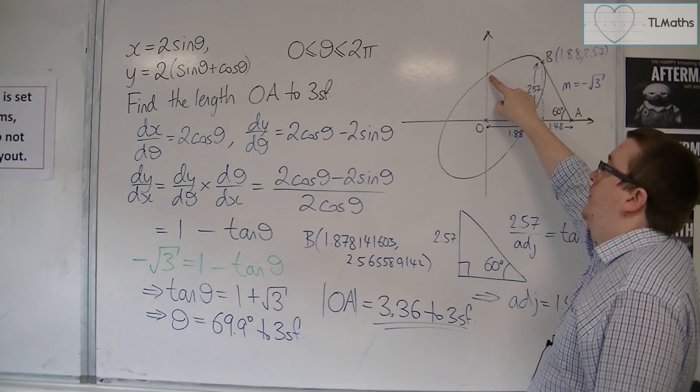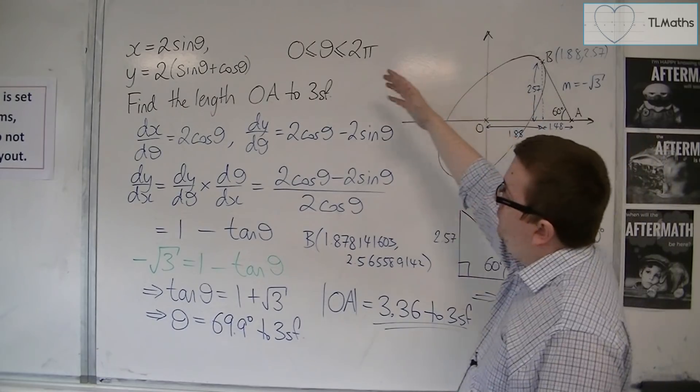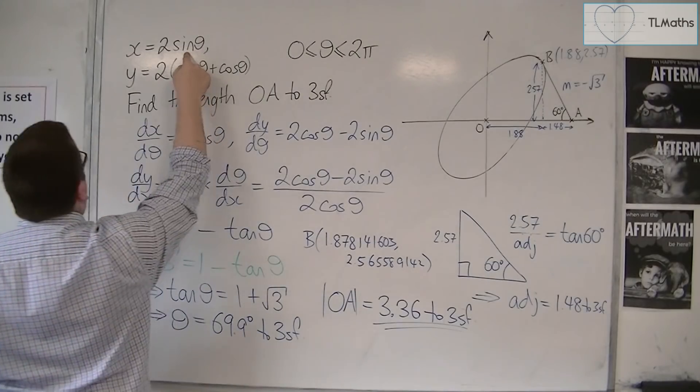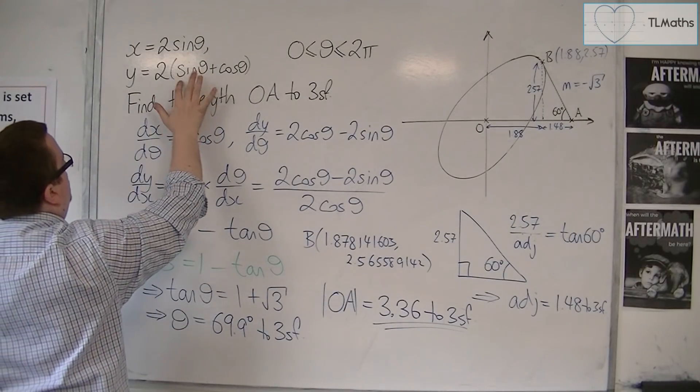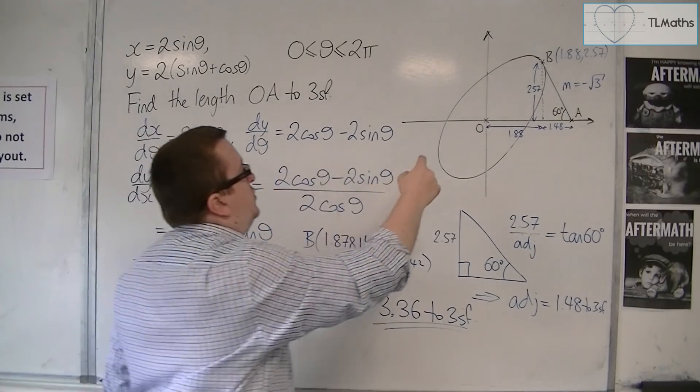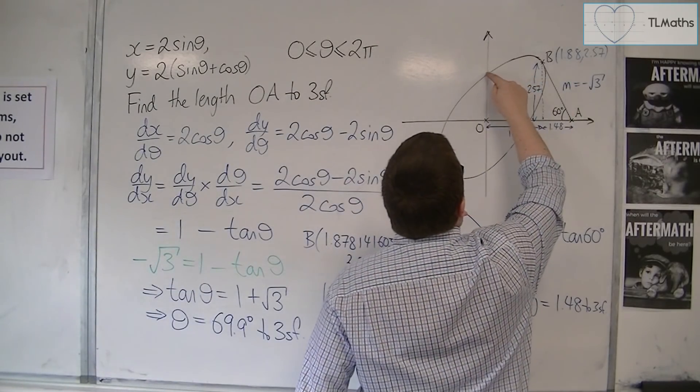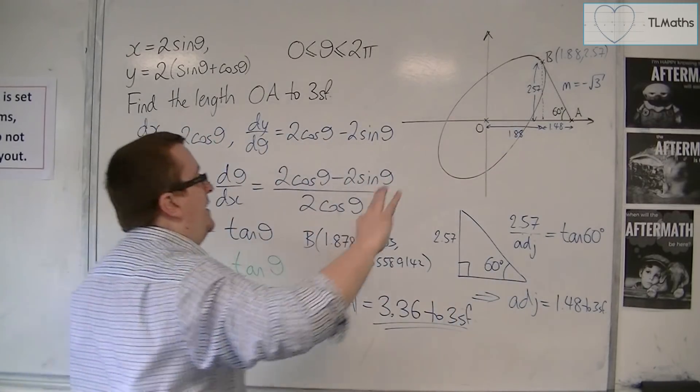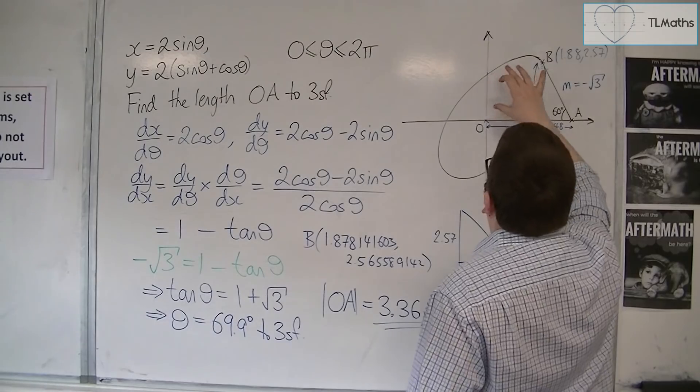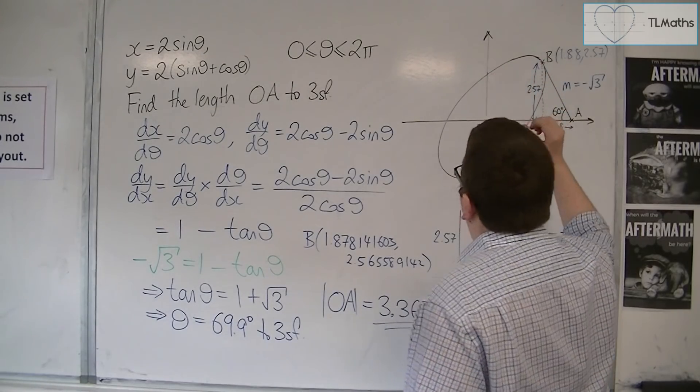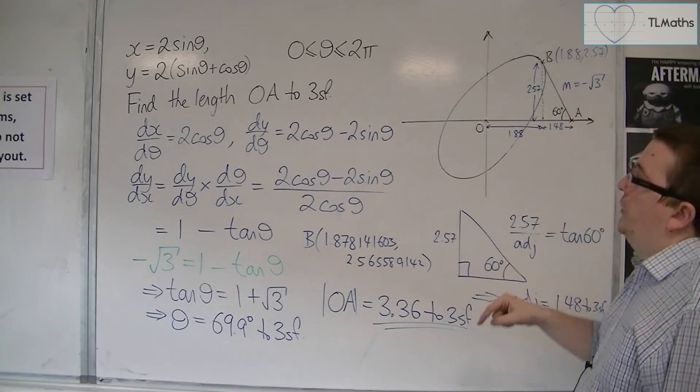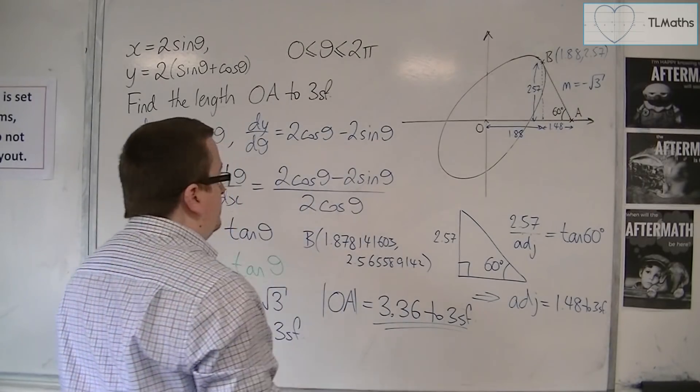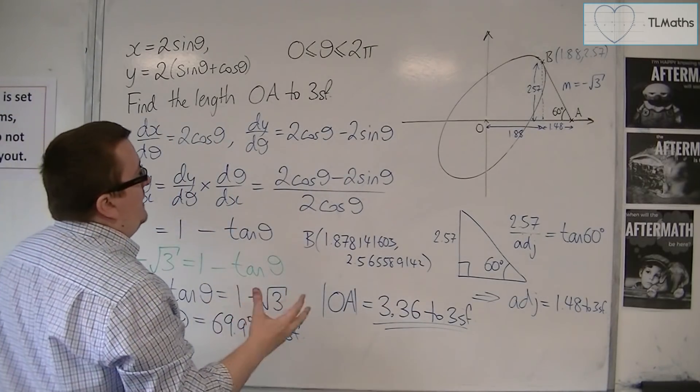When theta is pi over 2, then you get 2 lots of 1 and 2 lots of 1, so 2, 2. It's going to be somewhere over here. The curve is going around that way. So when theta is 0, pi over 2, pi, it's going around the circle that way. I know that 69.9 degrees makes sense.